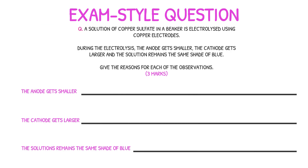Here's an example of a past paper question that you can attempt to test your understanding of the content covered in this video. Pause the video and take your time to work through the question, then press play once you're ready to check your answers. A solution of copper sulphate in a beaker is electrolysed using copper electrodes. During the electrolysis, the anode gets smaller, the cathode gets larger, and the solution remains the same shade of blue. Give the reasons for each of the observations.